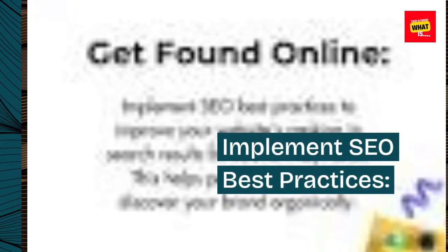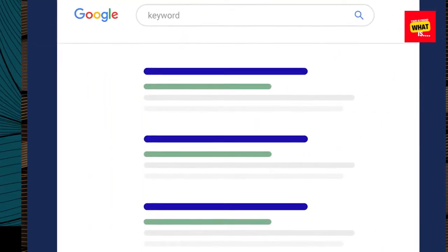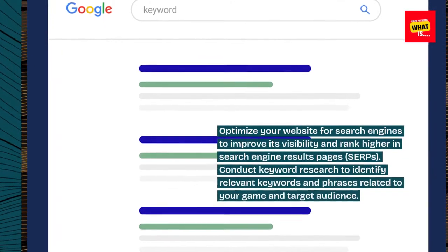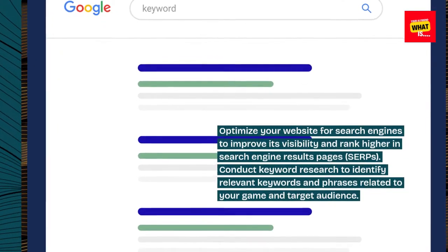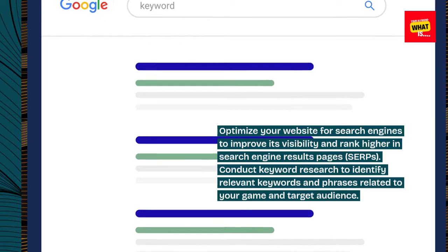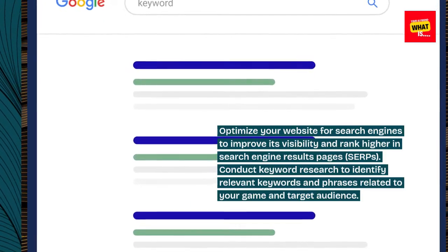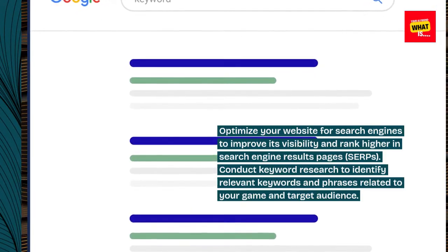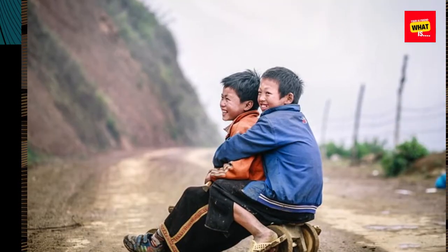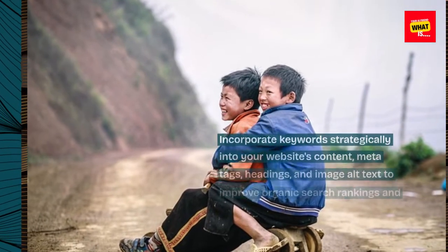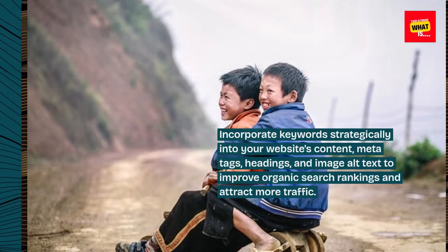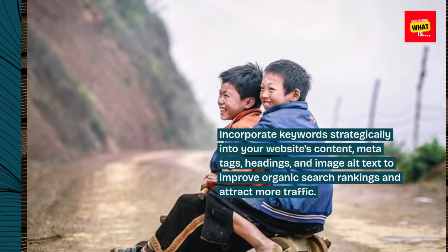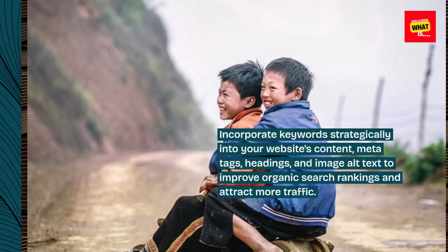Implement SEO Best Practices. Optimize your website for search engines to improve its visibility and rank higher in search engine results pages. Conduct keyword research to identify relevant keywords and phrases related to your game and target audience. Incorporate keywords strategically into your website's content, meta tags, headings, and image alt text to improve organic search rankings and attract more traffic.